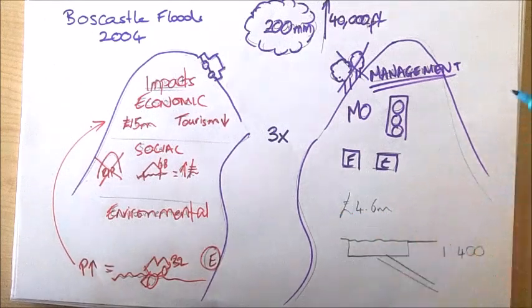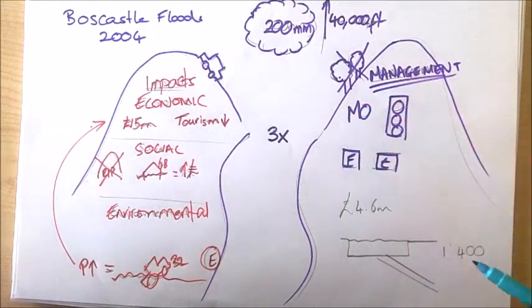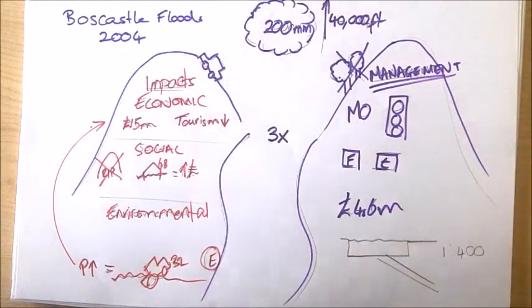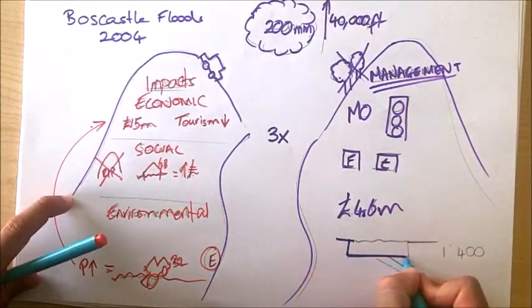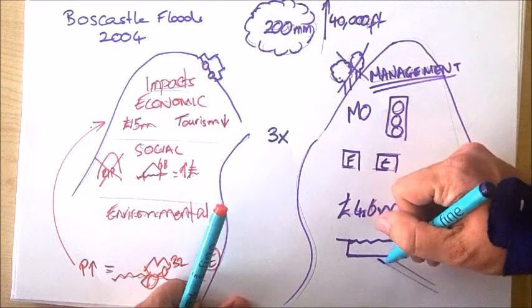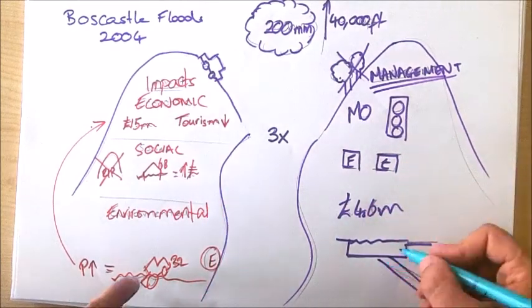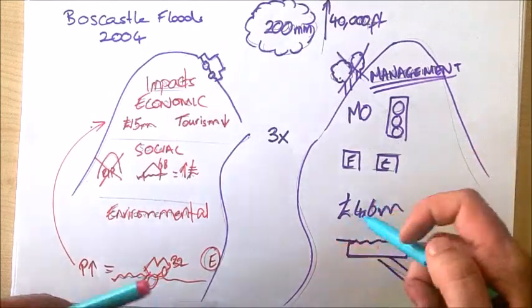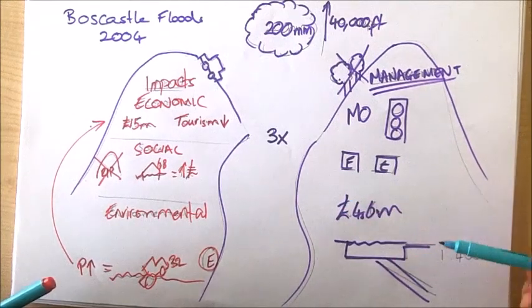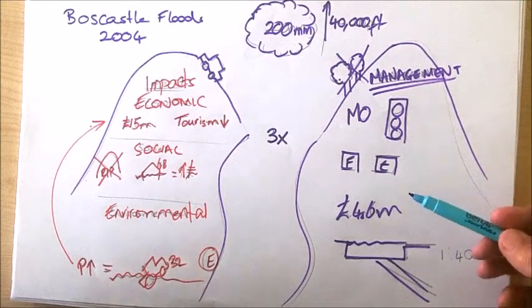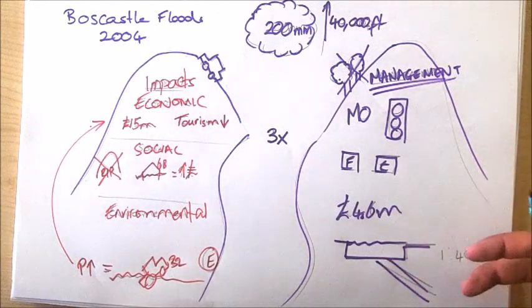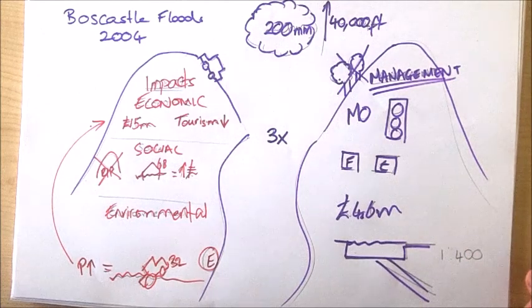One of the things that they did do in Boscastle in terms of long-term management, since these two are quite short-term, was to spend £4.6 million on flood defenses in Boscastle. This involved widening and deepening the river channel so that it could hold more volume of water, more discharge, and therefore reduce the chances of flooding, and also build storm drains that would take high amounts of rainfall quickly away from the town. £4.6 million does seem like a significant amount of money, however actually in terms of flood defenses it's quite small. Other flood defenses in the UK have seen much larger amounts of money spent on them. This is predominantly because Boscastle is a very small town or village, therefore actually the cost-benefit analysis of building the defenses means that spending any more probably wouldn't be financially worthwhile.